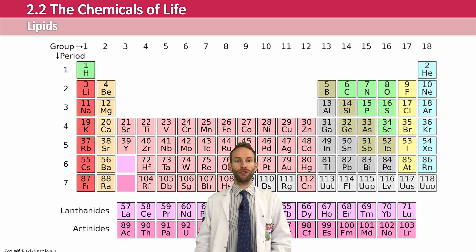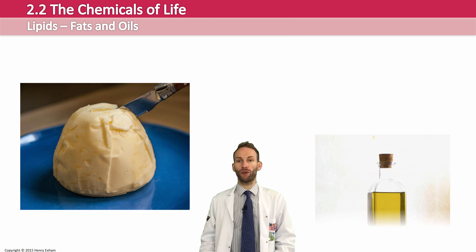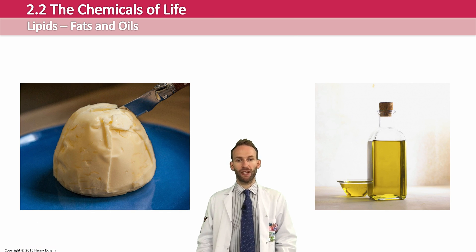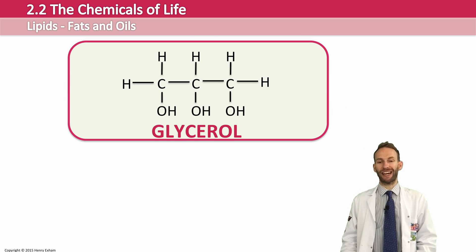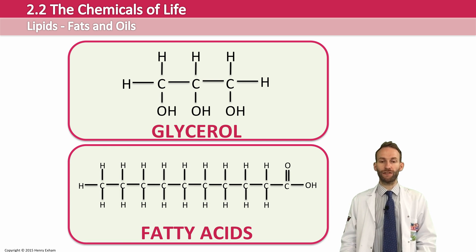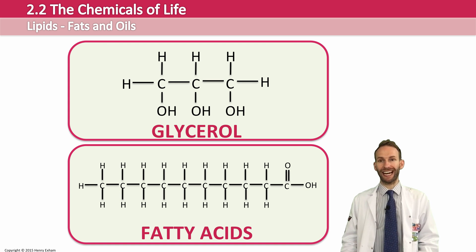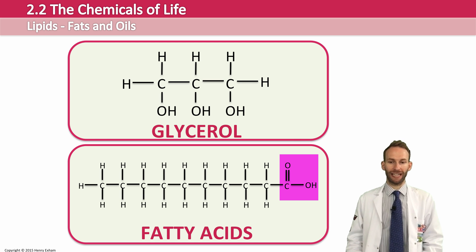Fats and oils are groups of lipids. Fats are solid at room temperature while oils are liquid at room temperature. They are made from two types of molecules: glycerol and fatty acids. Fatty acids are long chains of carbons and hydrogens, with a carboxylic acid group on the end — the C=O and OH — that's what gives it the name, the acid.